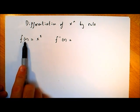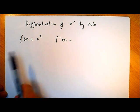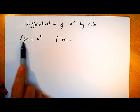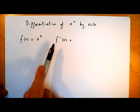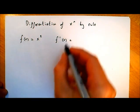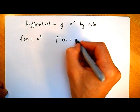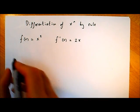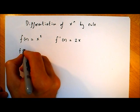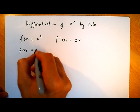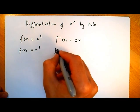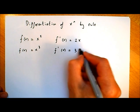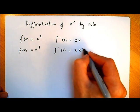In the last video we differentiated x squared, which meant we found the slope of the curve of x squared. So when f of x was equal to x squared, we found f dash of x, which is the slope, was equal to 2x. If we differentiated by first principles x cubed, we'd find that f dash of x would be equal to 3x squared.